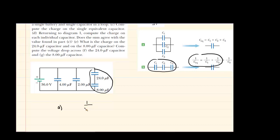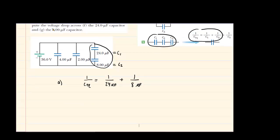So we can write the equation as follows: 1 over C_EQ equals 1 over C1, which is 24 microfarads, and then add that to 1 over C2, which is 8 microfarads. To add fractions you need to find a common denominator, or you could use a calculator. When you do that you're going to get 1 sixth on the right side, so 1 over the equivalent capacitance equals 1 over 6 microfarads.